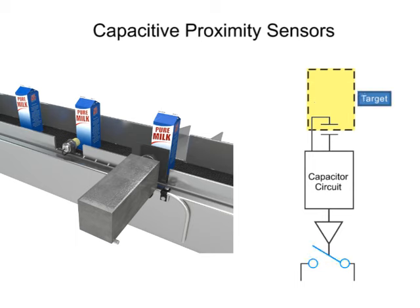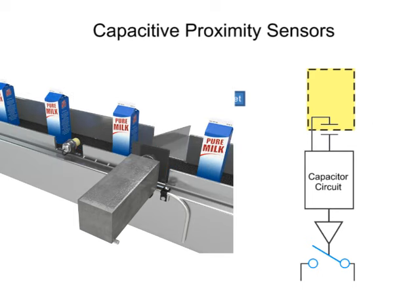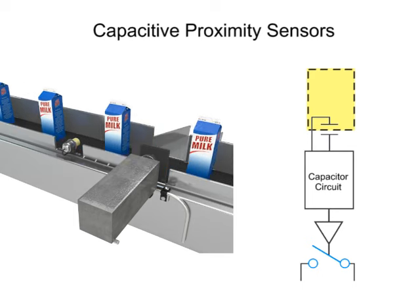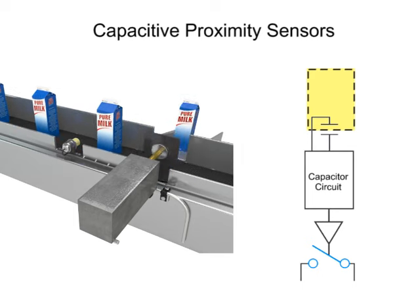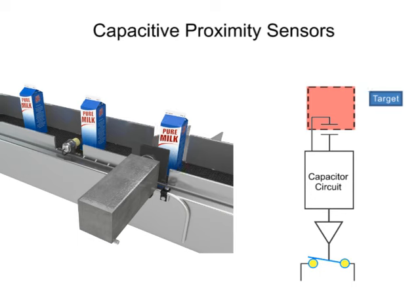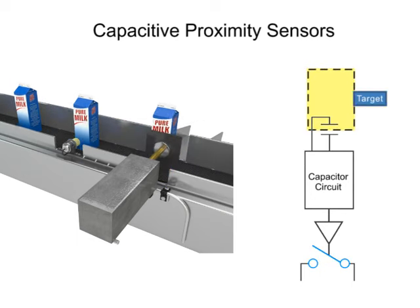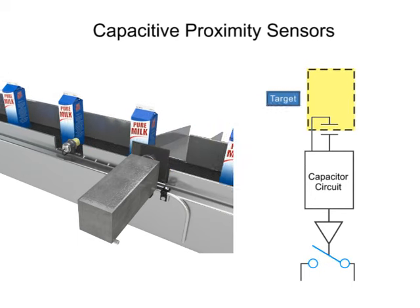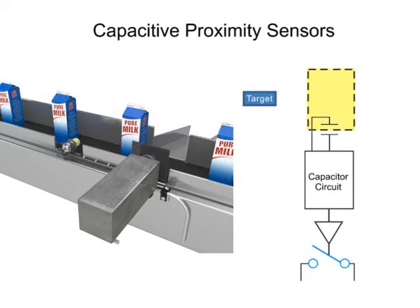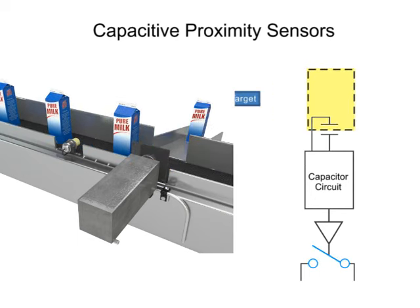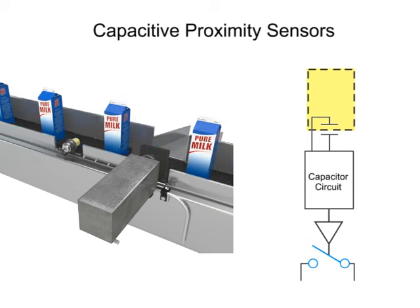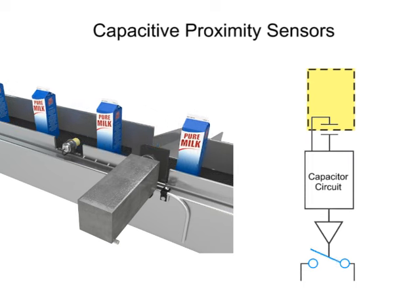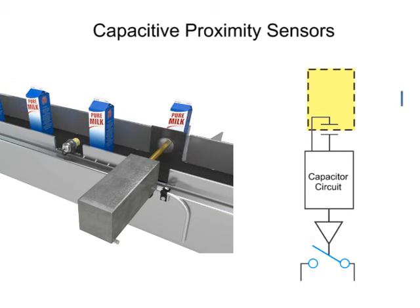In this example, if liquid is detected in the milk carton, the pusher device allows the milk to pass through. If no contents are detected, the pusher device rejects it and sends it to a different location.